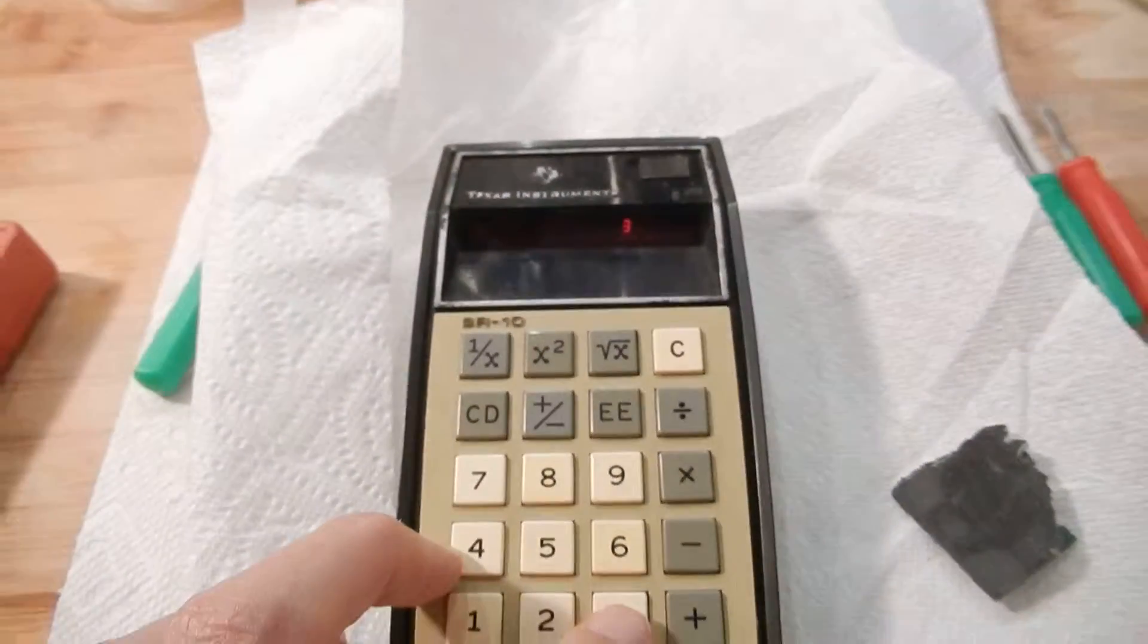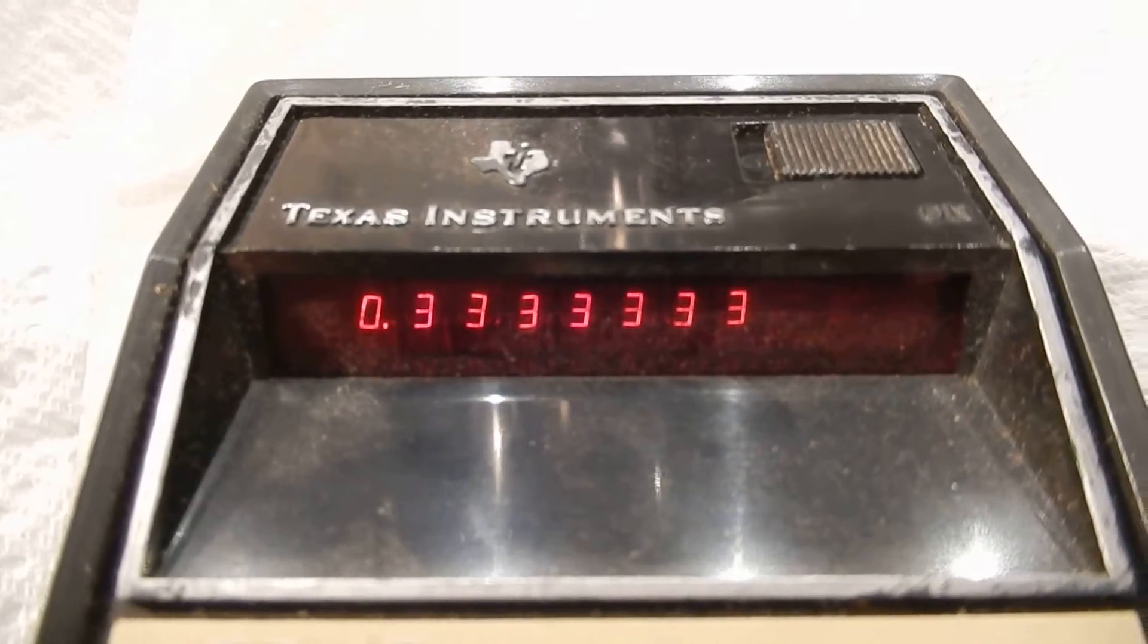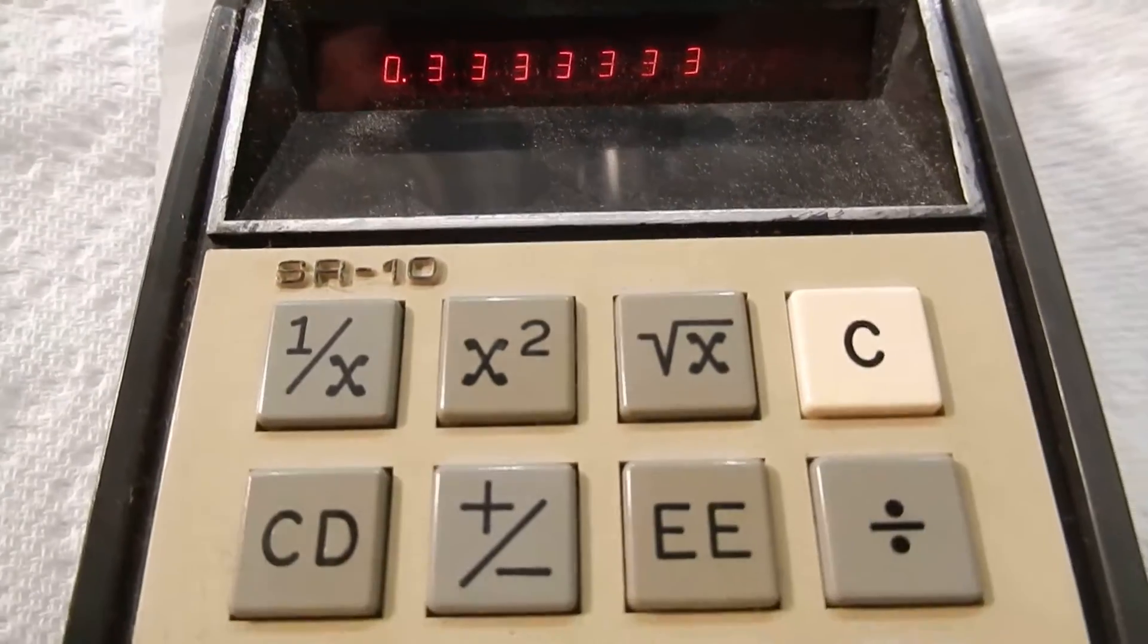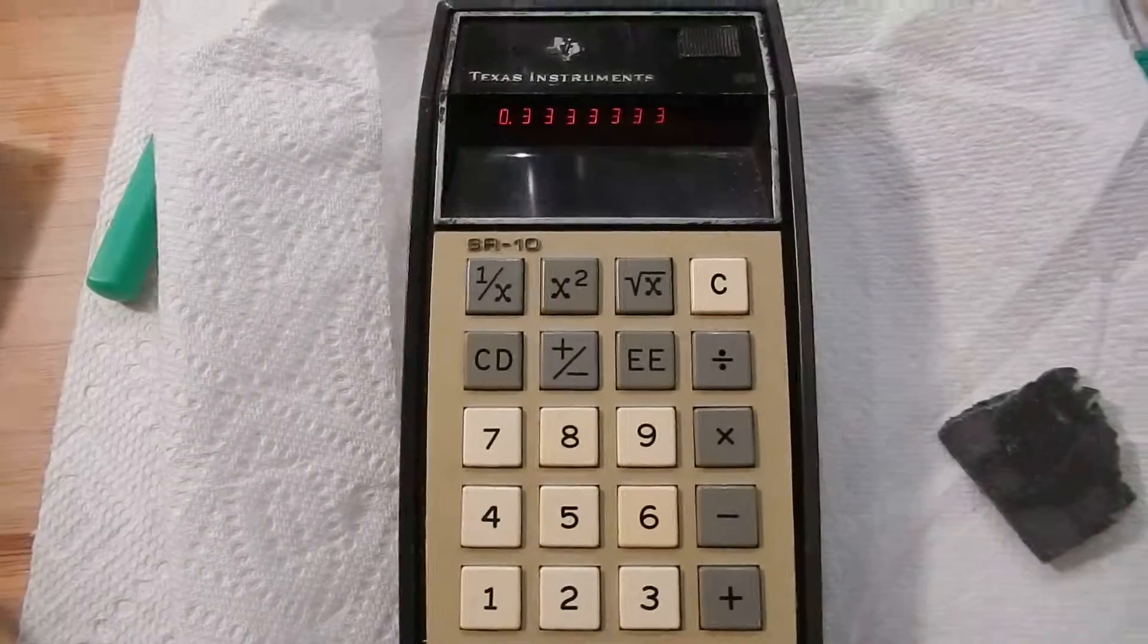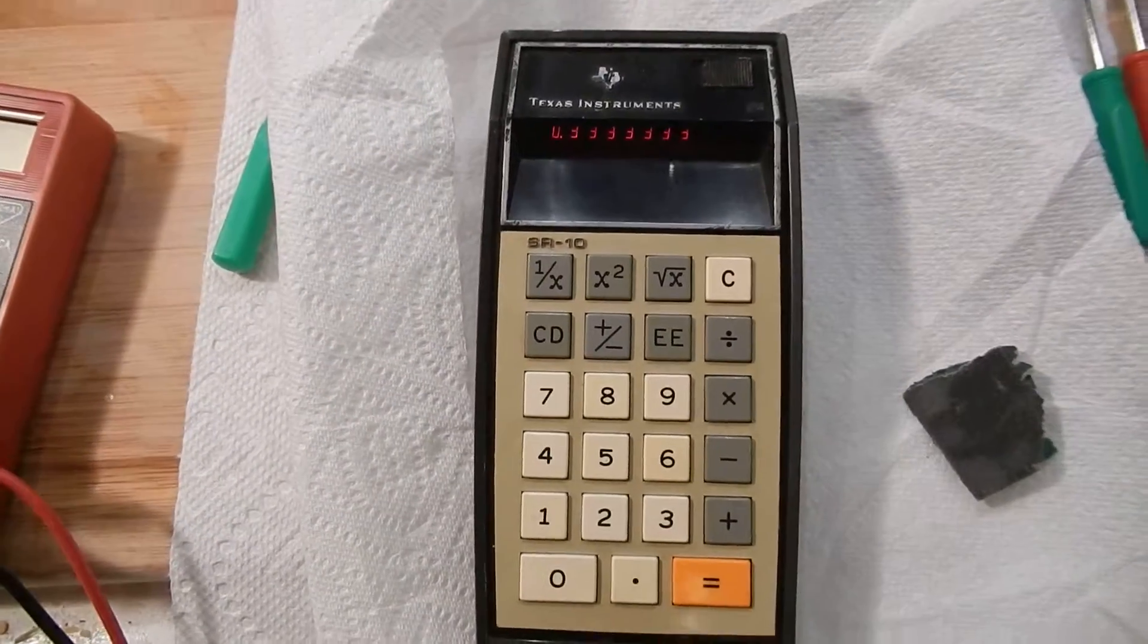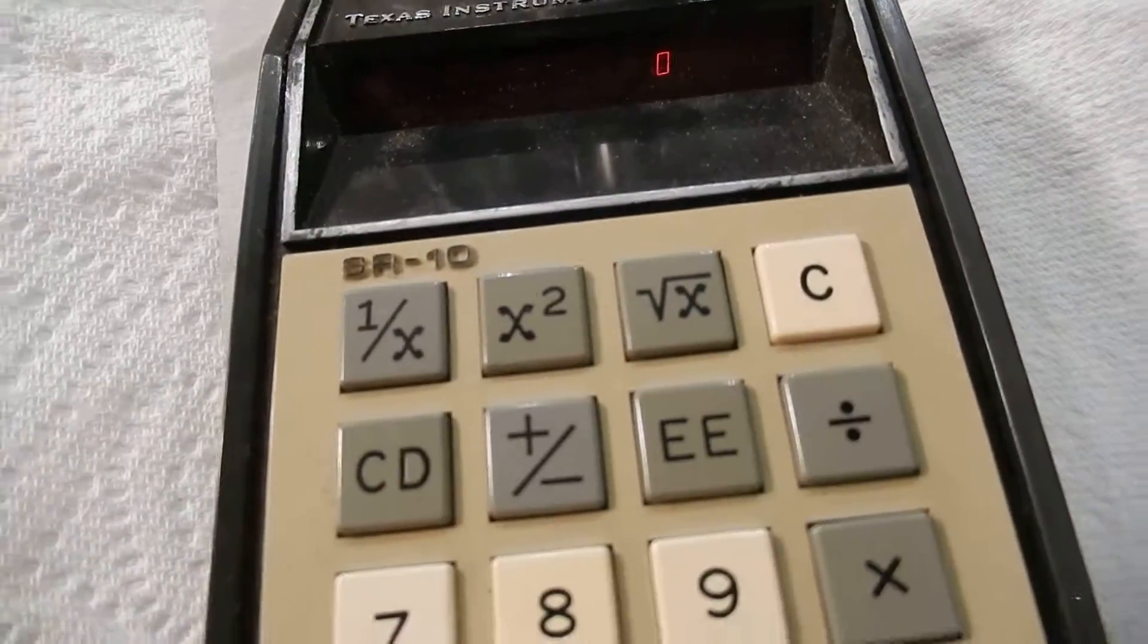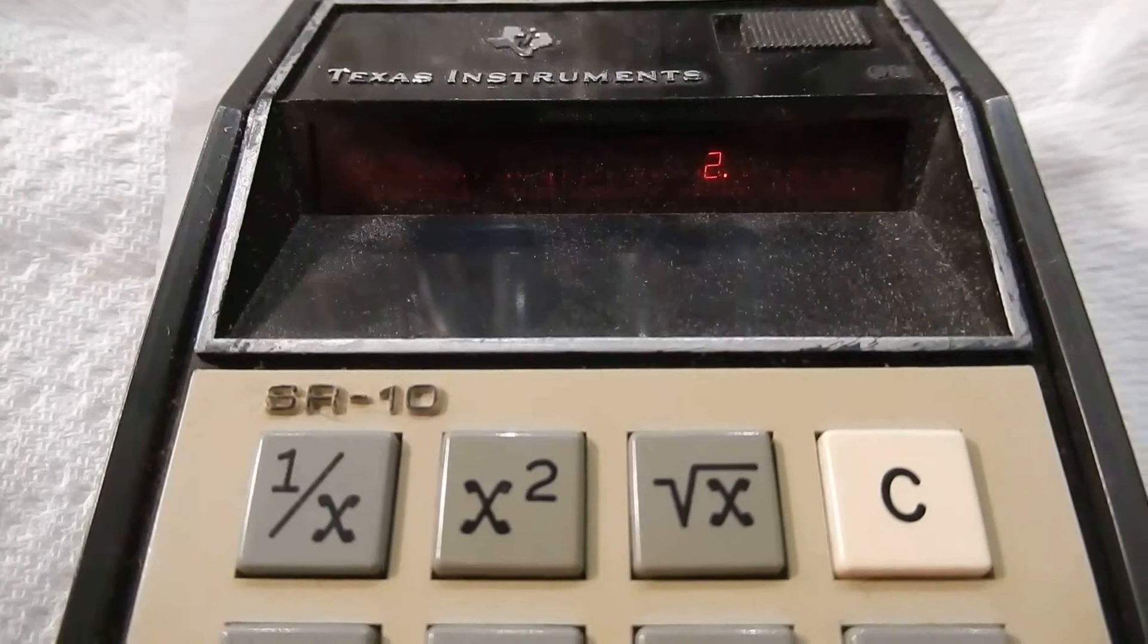All right, we've got a zero, that's good. Let's try something here: three, reciprocal, and we've got digits. It works, that's a good thing. Let's see, clear, square root of four. Yep, it still does the math correct. That's good, very good.